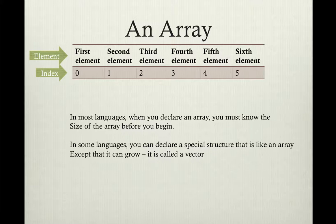In some languages, they have something very similar to an array called a vector, and they frequently will have both. The primary difference between an array and a vector is that a vector can grow — you can add things to the end of it. An array can't grow in most languages. It has a predefined size set at run time, using either a variable or a number you've assigned.